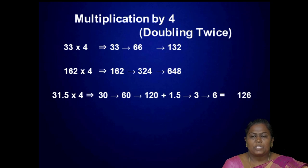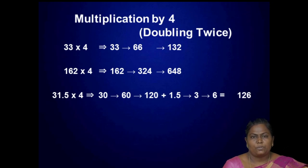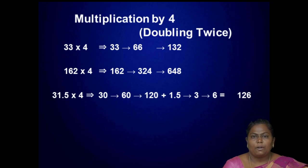Next, multiplication by 4. You have to double twice, since 4 can be split into 2 times 2. For given number 33 multiplied by 4: 33 can be doubled to 66, and 66 can be doubled to 132.